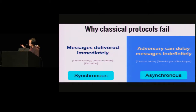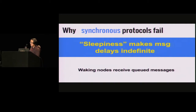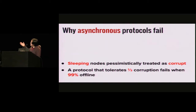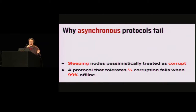We know a lot about both models, and many protocols have been proposed in the past that solve the consensus problem in these settings. It's relatively easy to see why synchronous protocols fail: in our model, we allow nodes to go to sleep, and when they wake up they receive the pending messages. This breaks the synchrony assumption — messages are not necessarily received immediately, and obviously all synchronous protocols don't work.